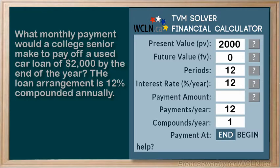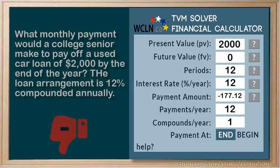So we're ready to calculate. We click the question mark and we end up with negative 177.12. The payments are coming out of our pocket and going to that loan, so we expect a negative — and that checks out.